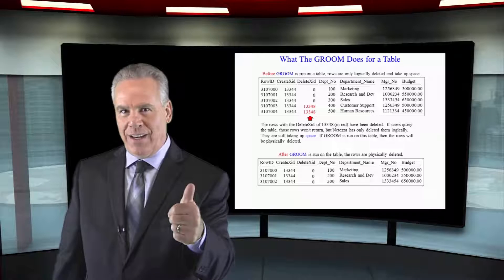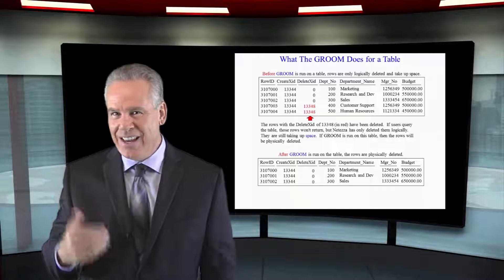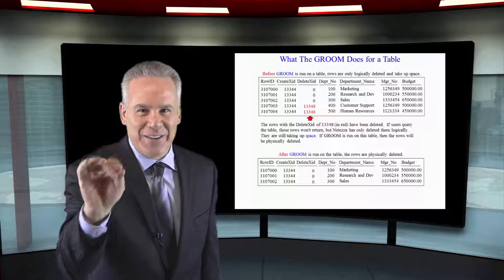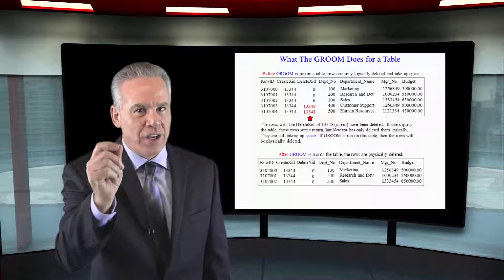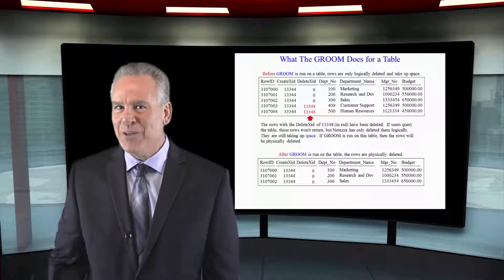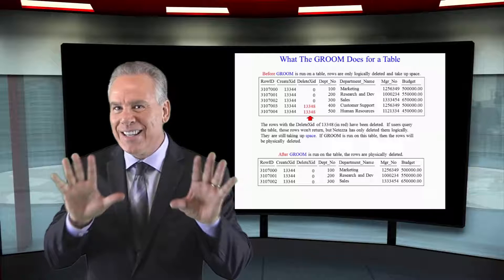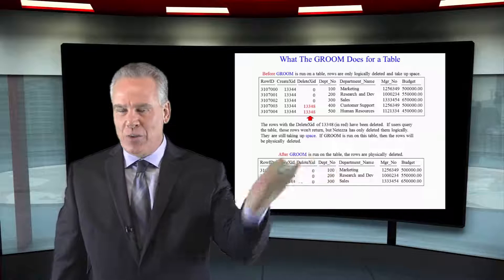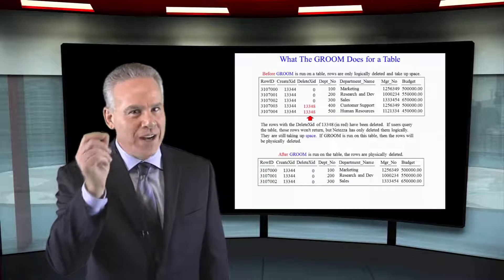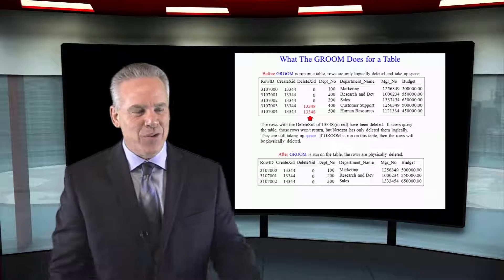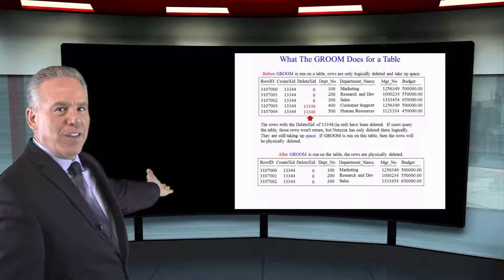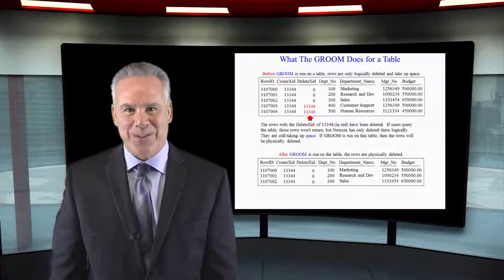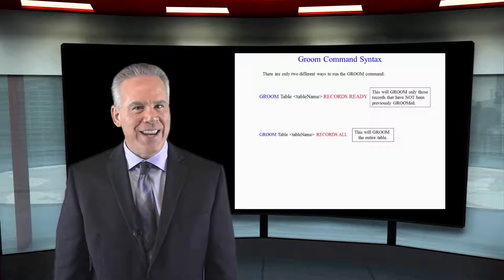There are 24 extra bytes in front of every row of every Netezza table: the row ID, the distribution key that's been hashed, the create XID that knows which transaction created these records, and if it's non-zero, the delete XID means that row has either been updated or deleted. It's not really there logically — it's just there physically. You can get a lot of these rows; they take up a lot of space. When you're ready to groom and clean this up, you run the GROOM command and everything is cleaned up.